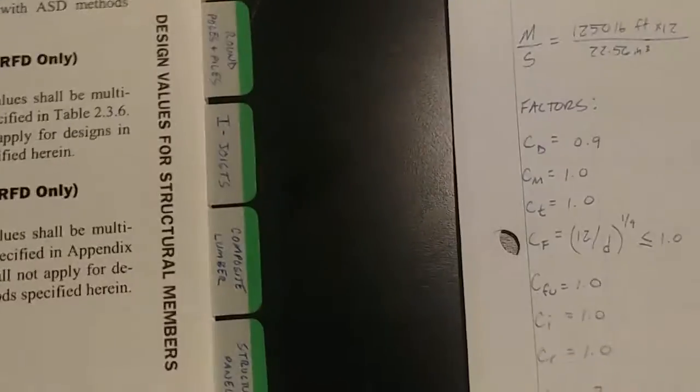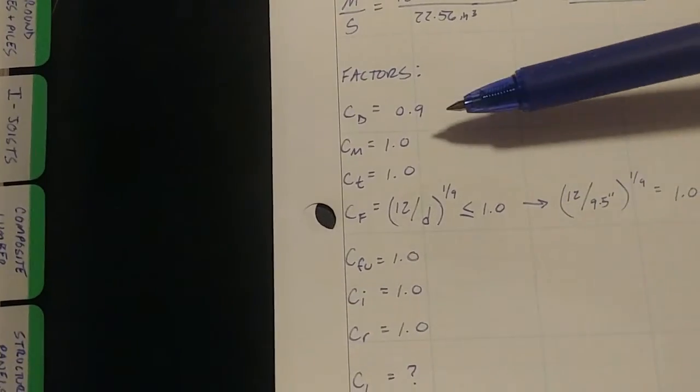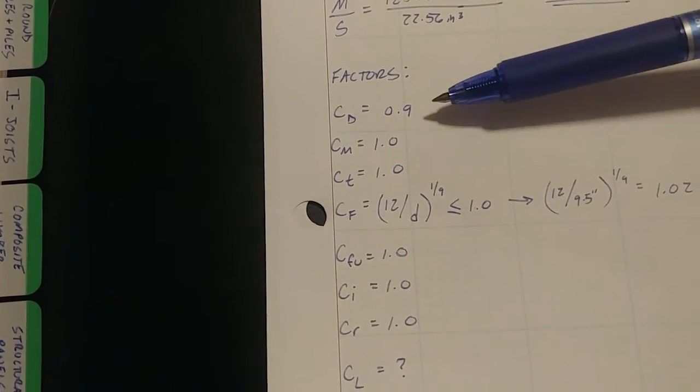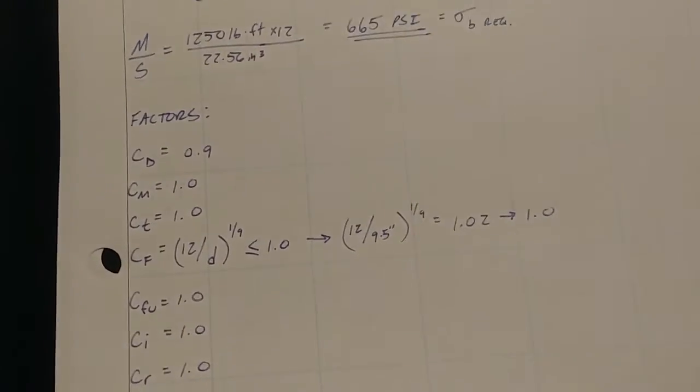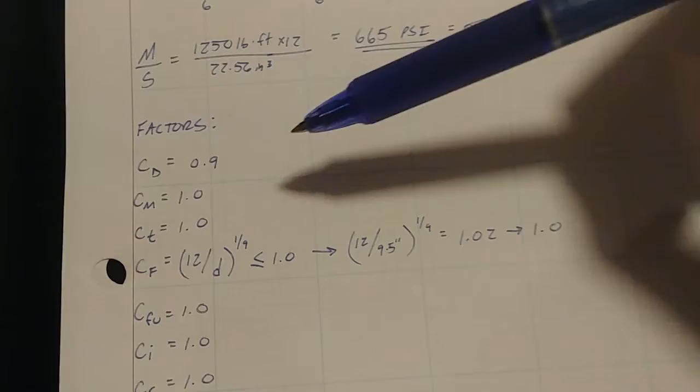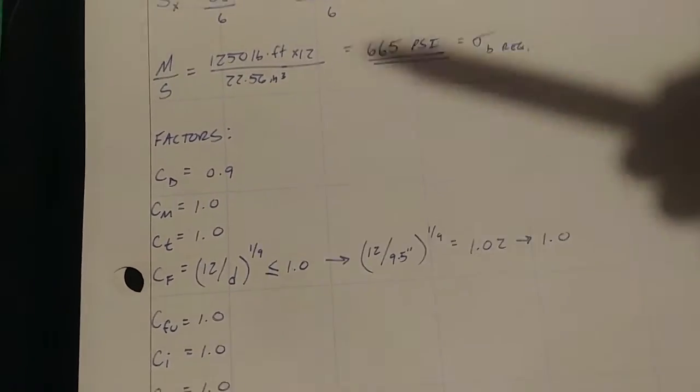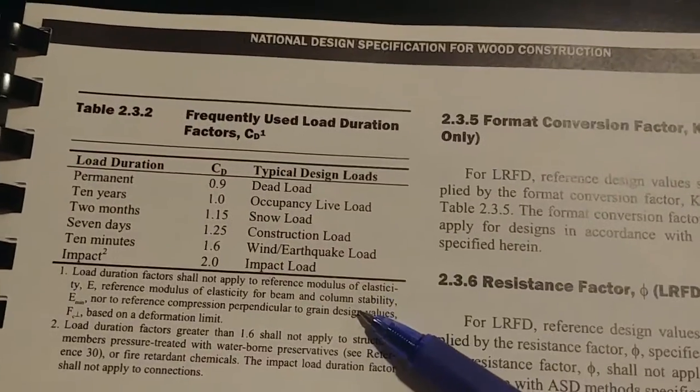And actually, believe it or not, for this case, I spaced out and use 0.9 using the dead load, but we're going to keep running through this, assuming 0.9. So let's just forget about that. Be our little secret, but this table, that's where it comes from.